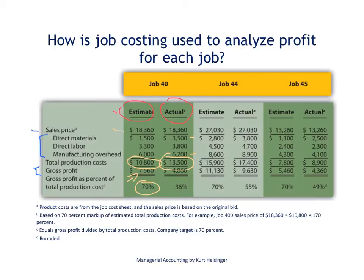As a result, our actual gross profit is significantly lower at $4,860 than our initial estimate of $7,560. Our gross profit turned out to be about 36% of our production costs rather than our goal of 70%. This is just a starting point for analyzing actual results compared to the original estimate. We'd want to dive in further to find out why direct materials, direct labor, and manufacturing overhead costs were higher, and use this information going forward when putting together estimates and bids for future jobs so that our profitability is where we'd like it to be.